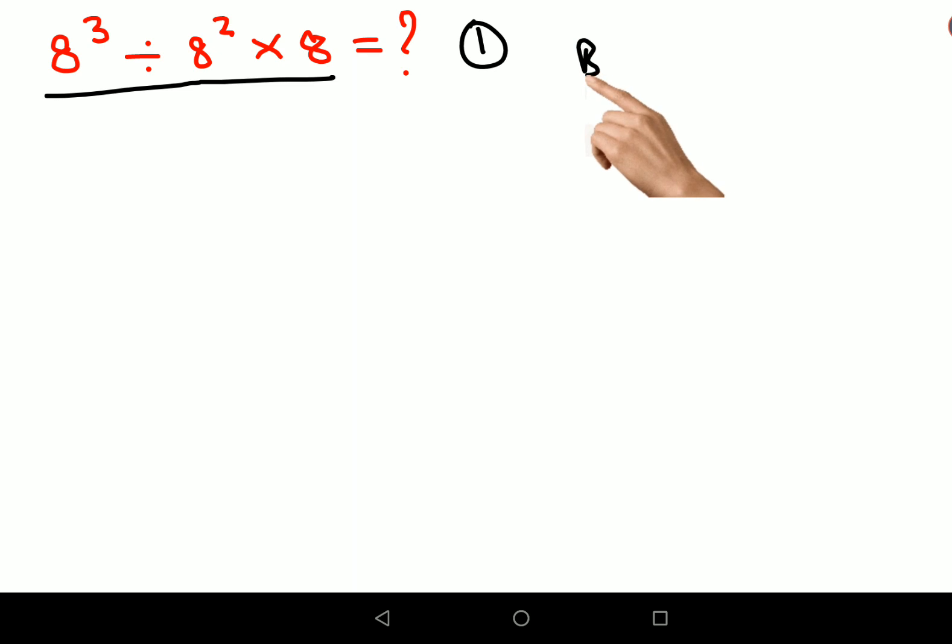When you're working with BODMAS or PEMDAS, whatever works for you, please understand you need to remember division and multiplication hold the same importance. So in this case you have to go from left to right.